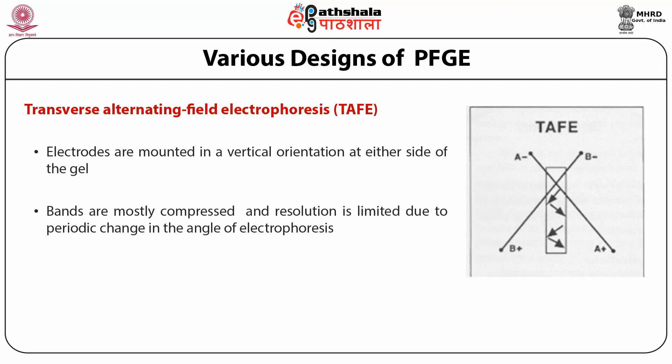Another variant is Transverse Alternating Field Electrophoresis (TAFE). In this electrophoresis, electrodes are mounted at a vertical orientation on either side of the gel and the electric field is switched. We can resolve a DNA mixture—larger DNA molecules are slow compared to smaller ones—but the disadvantage is that because we are applying the electric field from a vertical orientation, the resolved bands are usually squished and not well resolved compared to the previous two methods.